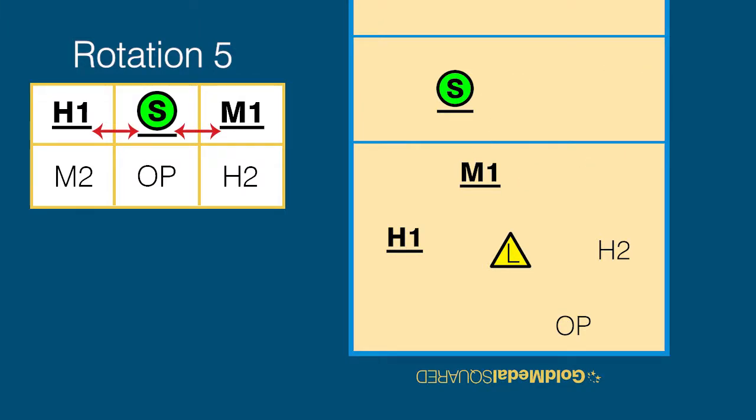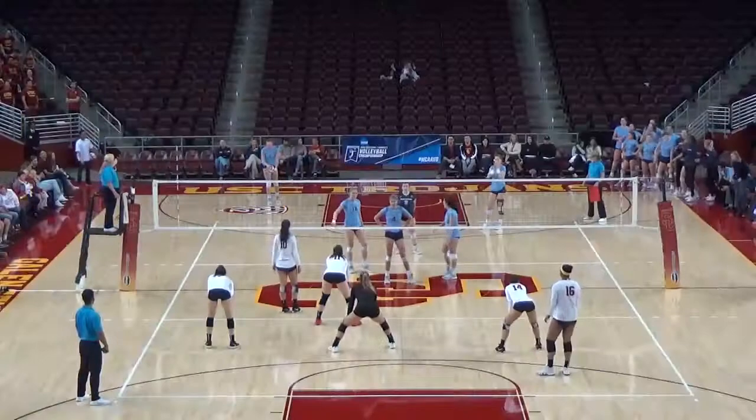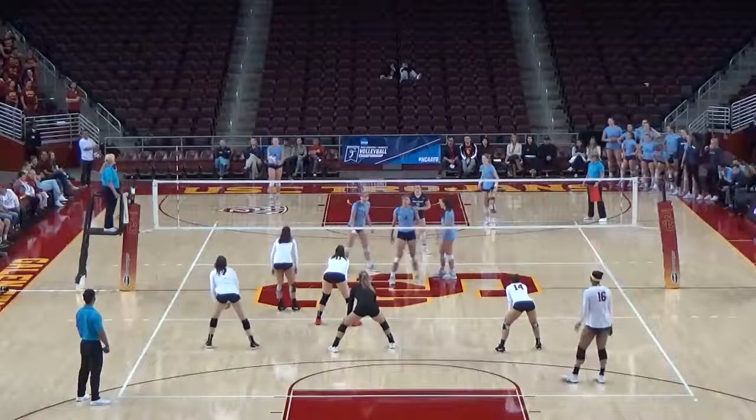You can also have the opposite pass in serve receive. If you'd like the opposite to pass instead of the H2, the opposite steps into zone 1 and the H2 steps back near the end line. The only overlap consideration here is that the H2 needs to be to the right of the opposite. The H1 is still passing in zone 5 and hitting a go. Here is what rotation 5 looks like with both of these changes.